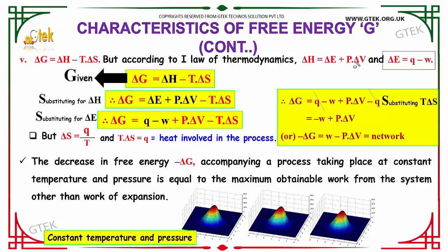Putting these values here, replacing delta H with this one and this one with this one, you will be getting this value. So delta G is equal to Q minus W plus P into delta V minus T into delta S.